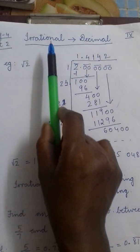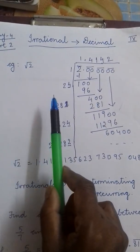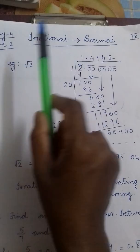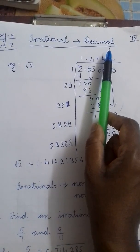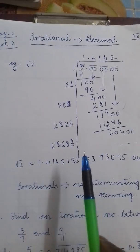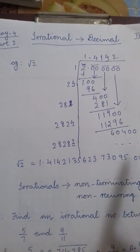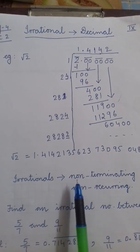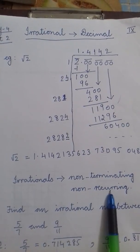So in rational numbers in the previous video, we have learned that rational number can be expressed in decimal form which is terminating or non-terminating recurring. But irrational numbers are non-terminating, non-recurring.